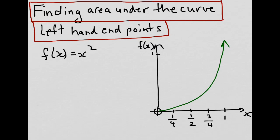Starting with our first left-hand endpoint at the left, it would be here at (0, 0). We draw a horizontal line over to the first sub-interval — in this case it's just a straight line, not a rectangle, but that is just the nature of where the endpoint was on our curve. Then our left-hand endpoint at a quarter would be right here; draw a horizontal line over to the adjacent endpoint and form a rectangle.